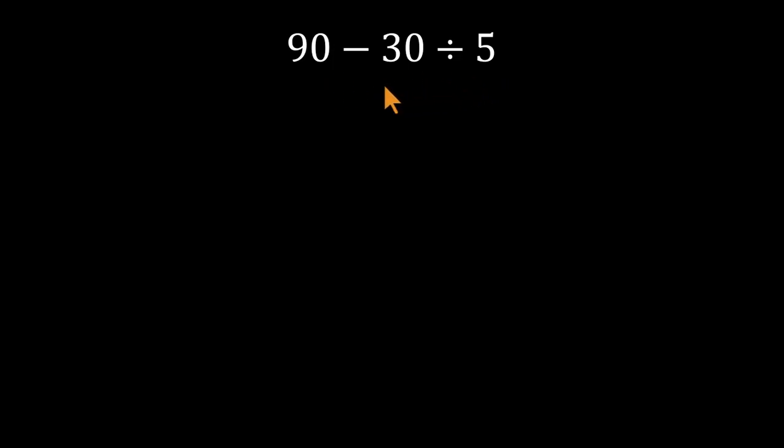Here's the incorrect path many folks take. They jump straight into the subtraction. 90 minus 30 gives them 60. Then they divide that 60 by 5 and land on 12. But that result is incorrect.